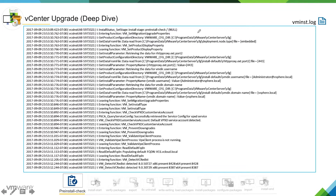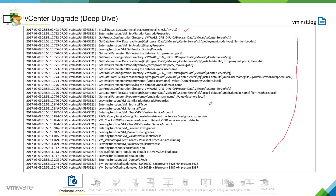If you open vminstall.log, this log is being created by the vCenter installer. You can see you are in the pre-installed check phase and the system is doing pretty much whatever it summarized in the summary report we saw earlier. We can see it is checking FQDN, the operating system, and everything — pretty much the same information we saw earlier.